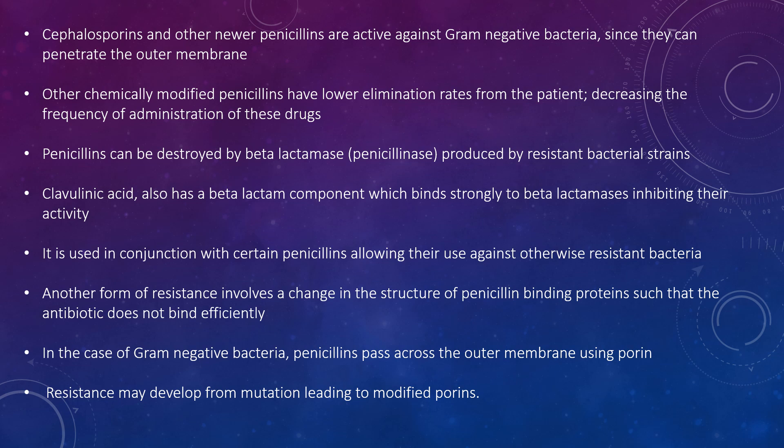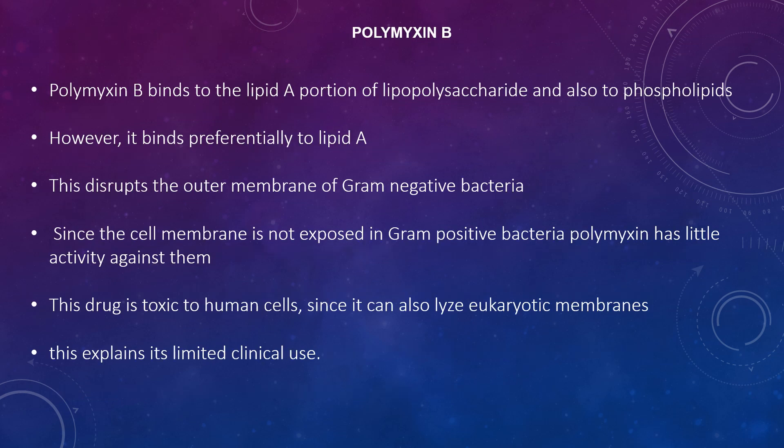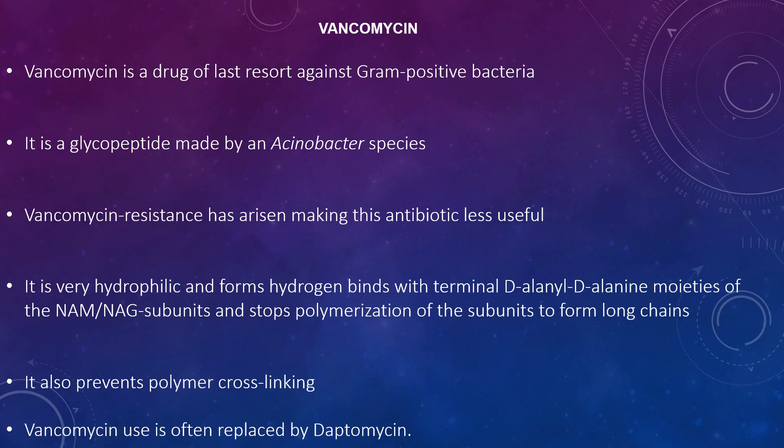Polymyxin B binds to the lipid A portion of lipopolysaccharide and also to phospholipids, but binds preferentially to lipid A. This disrupts the outer membrane of gram-negative bacteria. Since the cell membrane is not exposed in gram-positive bacteria, polymyxin has little activity against them. This drug is also toxic to human cells as it lyses eukaryotic membranes, explaining its limited clinical use.